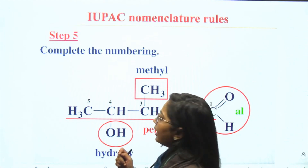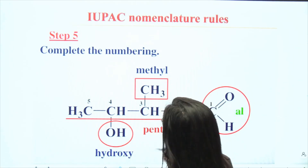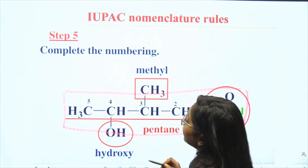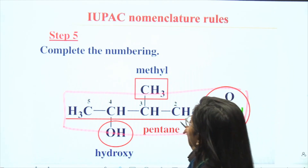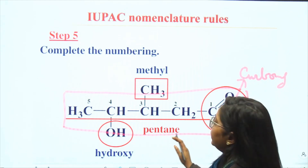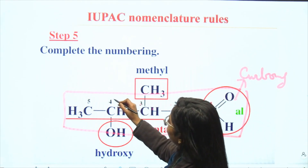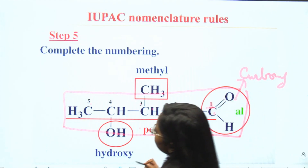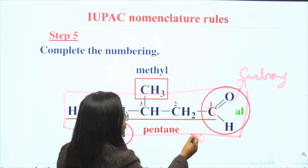Now we complete the numbering. After adding the prefix, we give numbering to the compound. We always start numbering from the end closest to the main functional group — that is, we start from the end so that the main functional group gets the lowest possible number. In this compound the main functional group is carbonyl, so we start numbering so that it gets position 1. If we started from the other end, the carbonyl would get position 5, which is not acceptable. So we number from the carbonyl end: 1, 2, 3, 4, 5.